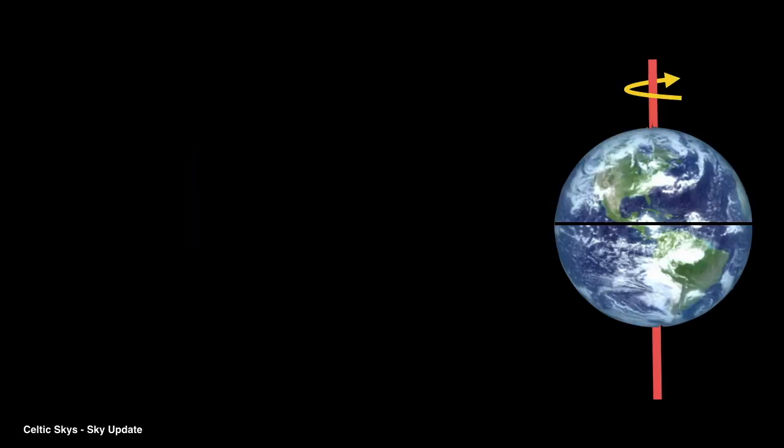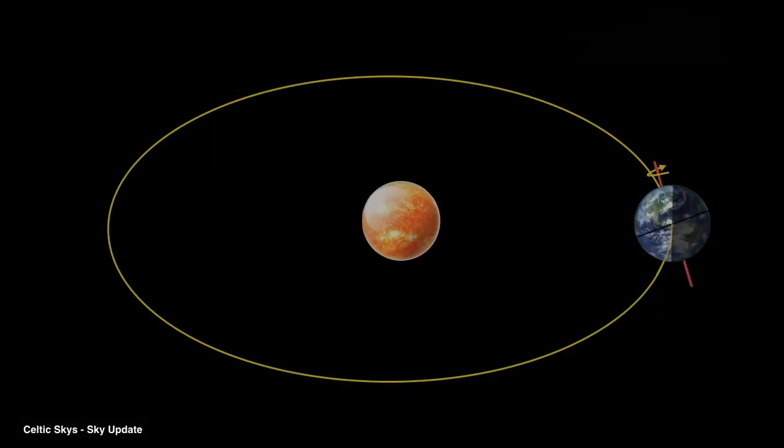The Earth, like all planets, has two basic movements. One is to rotate around an apparent axis, which goes through the planet from the South Pole to the North Pole. This spinning effect gives us day and night. The other movement is its orbit around the Sun, which defines our year.